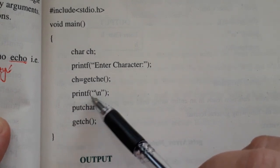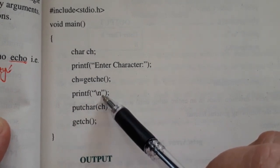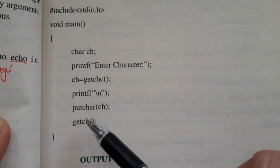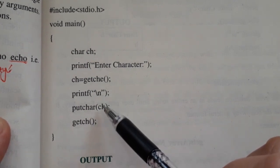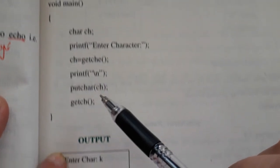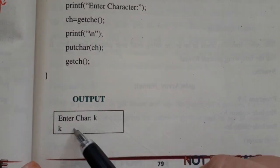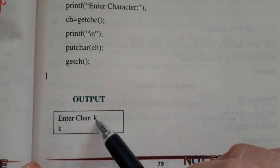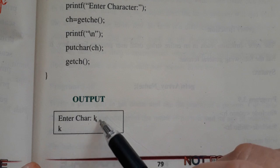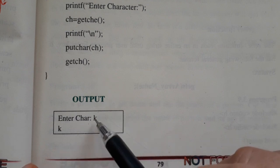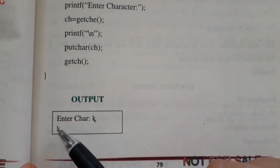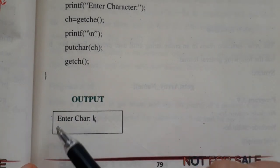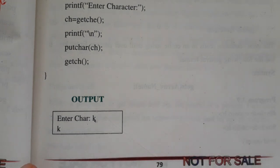اس کے بعد printf backslash n سے new line print ہو جائے گی، اور putchar جو بھی ch میں variable ہے اس کو display کر لے گا، screen پہ دکھائے گا۔ اب output کو دیکھیں - enter character تو k جب ہم نے enter کر لیا، تو getche نے اس کو display بھی کیا - k نظر آ رہا ہے۔ ہم نے کی بورڈ سے k enter کیا، وہ k نظر آ رہا ہے، اور پھر putchar function سے display ہوا۔ یہ دراصل input data اور یہ output data ہے۔